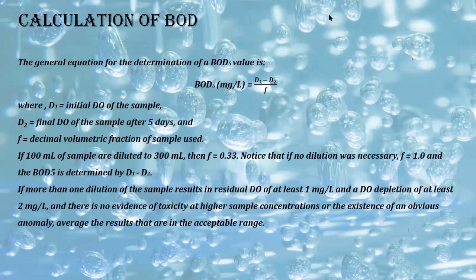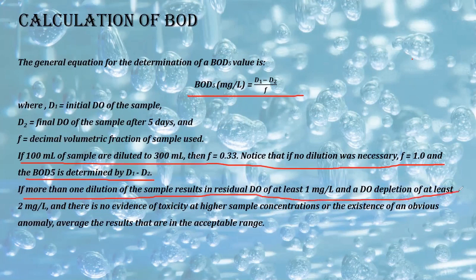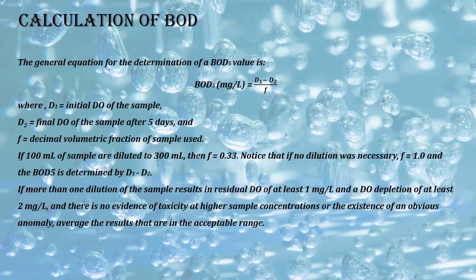For BOD₅ calculation: BOD₅ = (D₁ − D₂) / f, where f is the decimal volumetric fraction of sample used, D₁ is initial DO, and D₂ is DO after five days. If 100 mL of sample is diluted to 300 mL, f = 0.33. If there is no dilution, f = 1 and BOD is determined directly by D₁ and D₅.